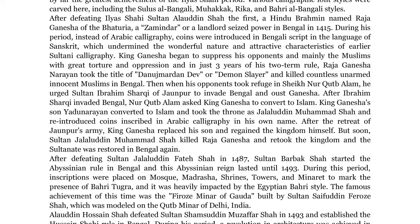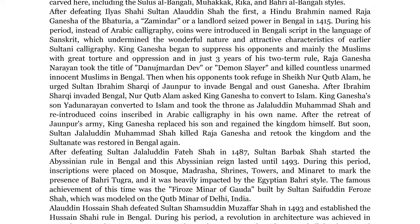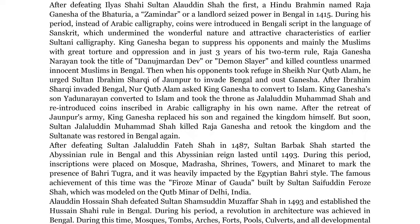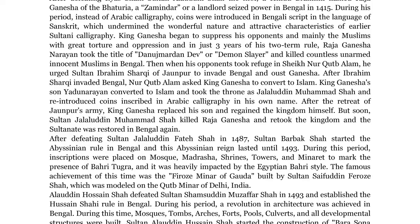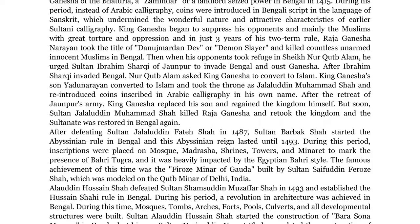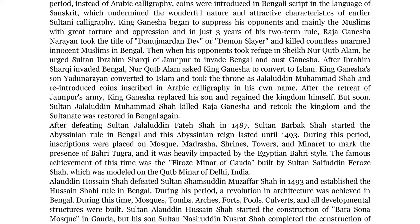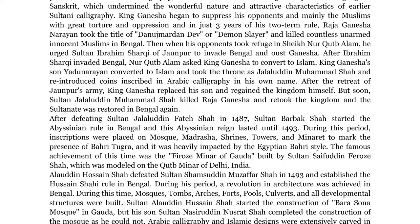After defeating Sultan Jalaluddin Fatah Shah in 1487, Sultan Bar Bak Shah started the Abyssinian rule in Bengal, which lasted until 1493. During this period, inscriptions were placed on mosque, madrasha, shrines, towers, and minaret to mark the presence of Bari Tughra, and it was heavily impacted by the Egyptian Bari style. The famous achievement of this time was the Feroz Manar of Gouda, built by Sultan Saifuddin Feroz Shah, which was modeled on the Kutab Manar of Delhi, India.